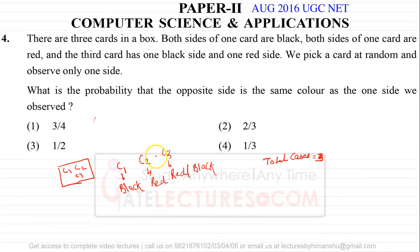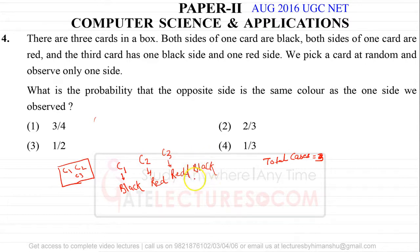You pick a card and see the color from one side. Let's say one side is red, then you flip the card and the other side should also be the same color. There are only two cards — C1 and C2 — which are the same color from both sides. C1 is black from both sides and C2 is red from both sides. But if you pick C3, one side will be red and the other will be black, so that is not the case we want. We want either black from both sides or red from both sides — the color on both sides must be the same.